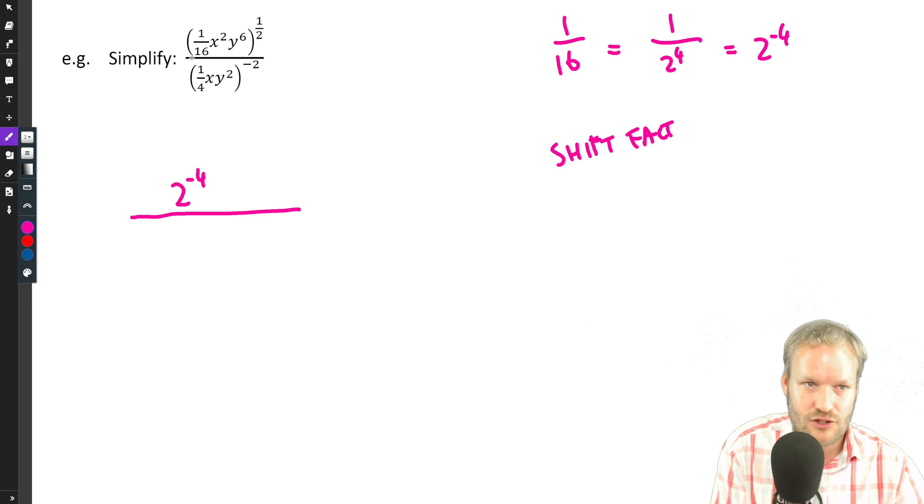Okay, so why is this helpful? We can write the numerator then as two to the negative four in place of the one over 16, and the rest will remain the same, so x squared y to the six. And we're putting that whole thing to the power of a half.